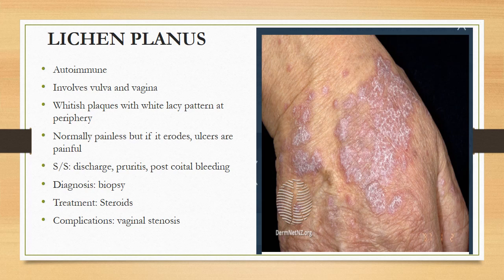Normally these lesions are painless, but if they erode, ulcers are formed and those ulcers can be very painful. When they affect the genitalia, they normally involve the vulva and vagina, and the symptoms are mostly discharge, pruritus, and post-coital bleeding. For diagnosis, we need to do a biopsy to rule out psoriasis.